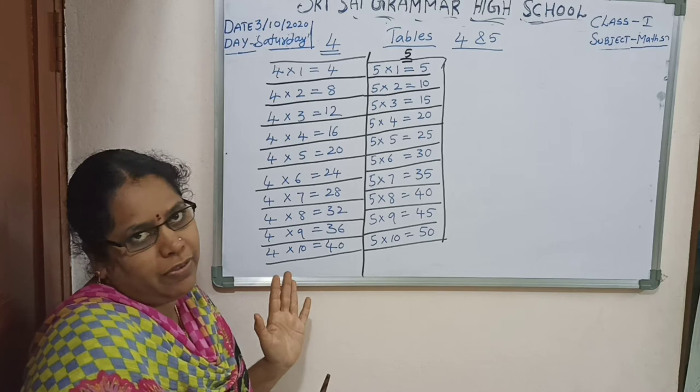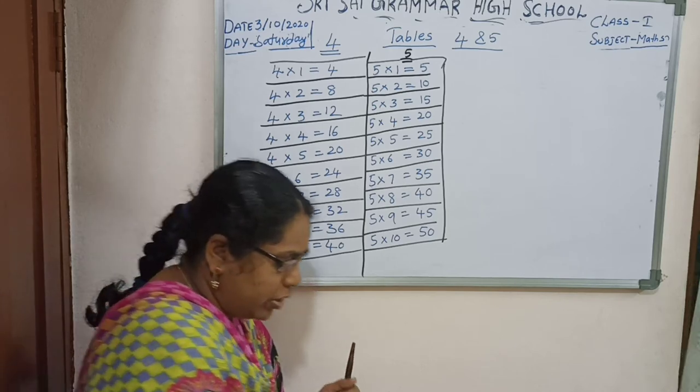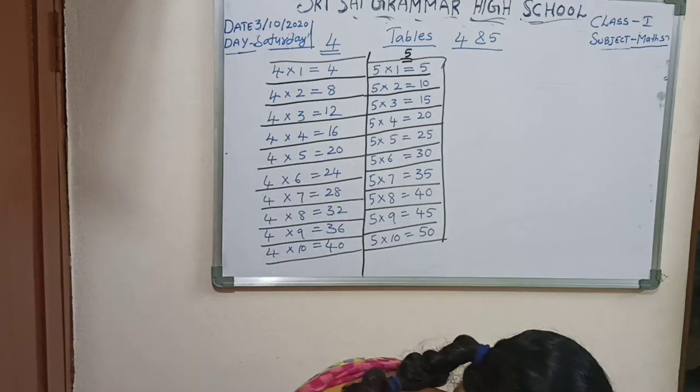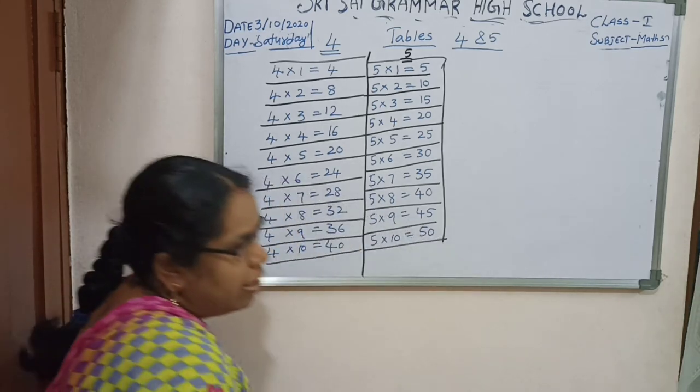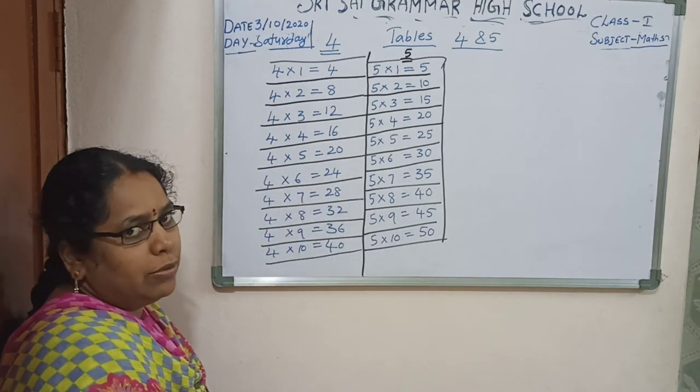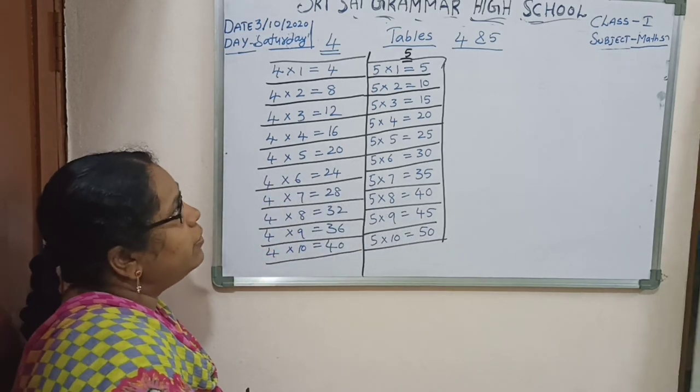Children, 4 and 5 tables — everyone should learn very well.